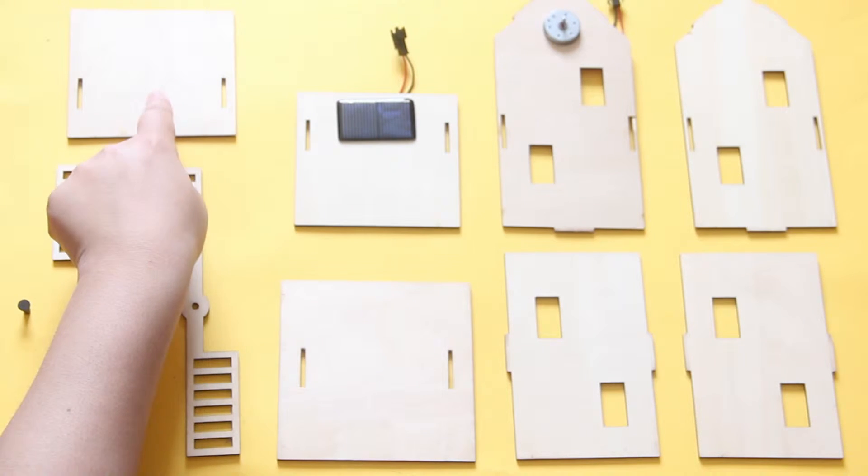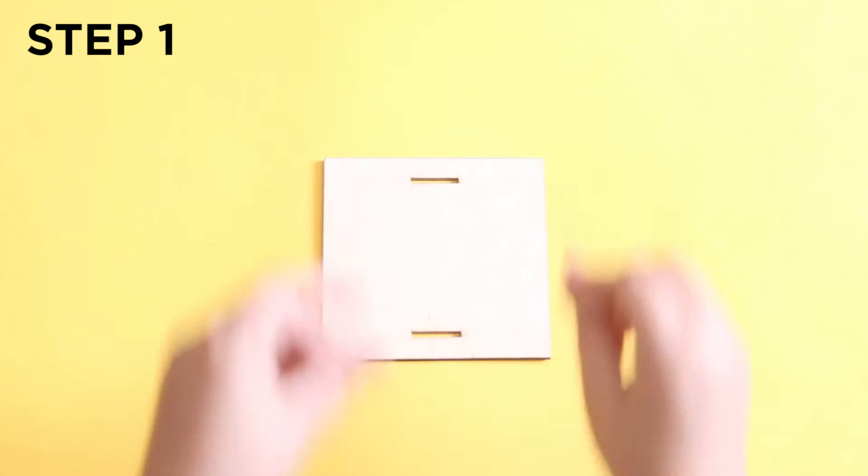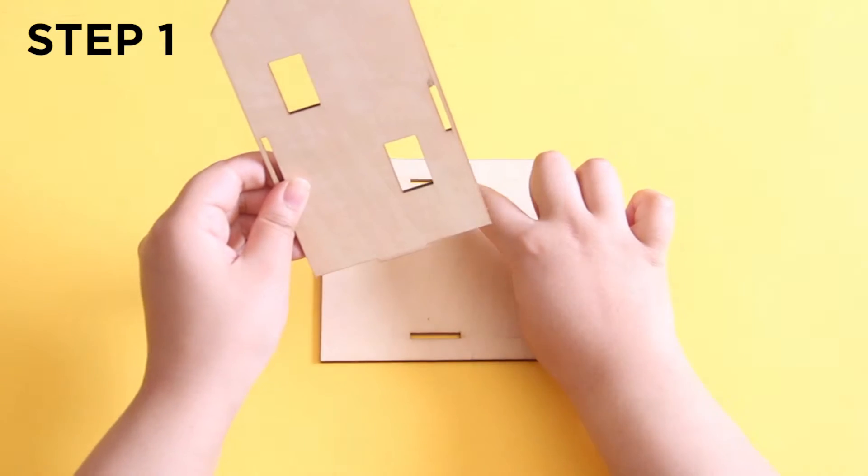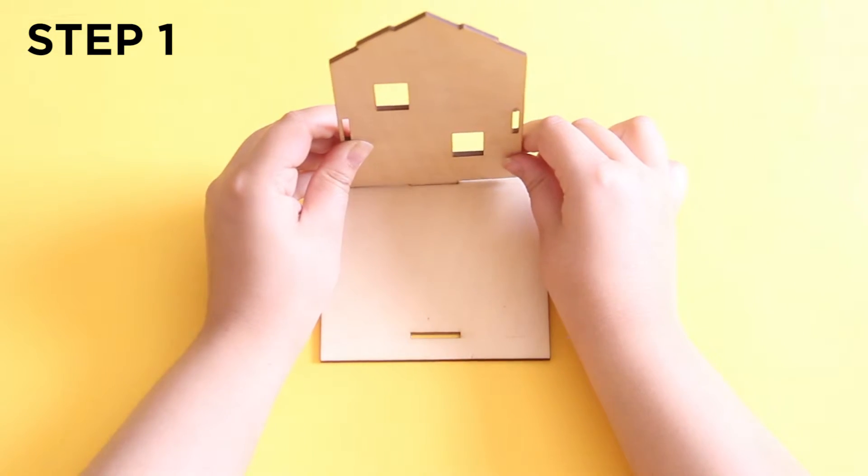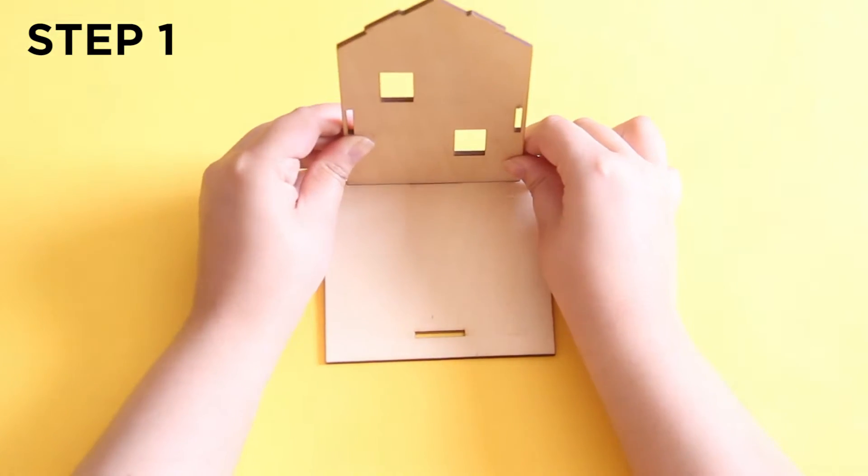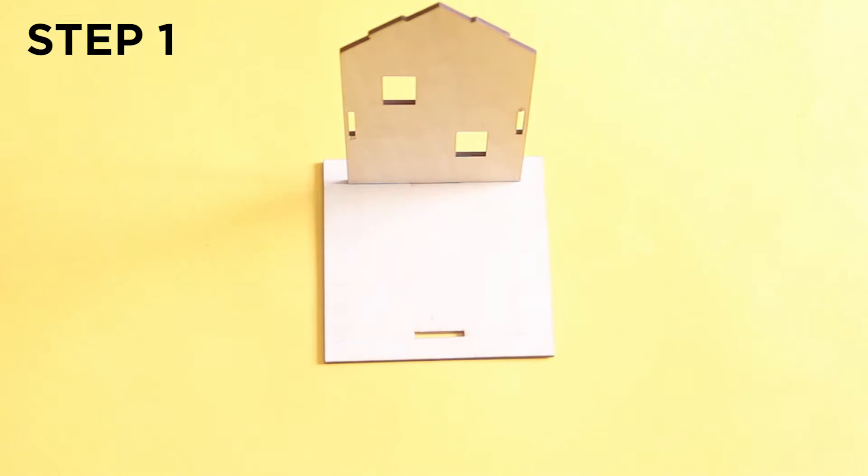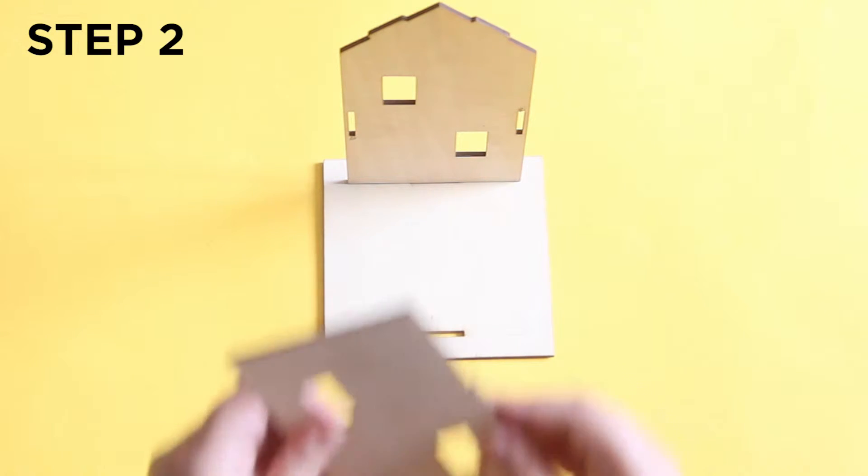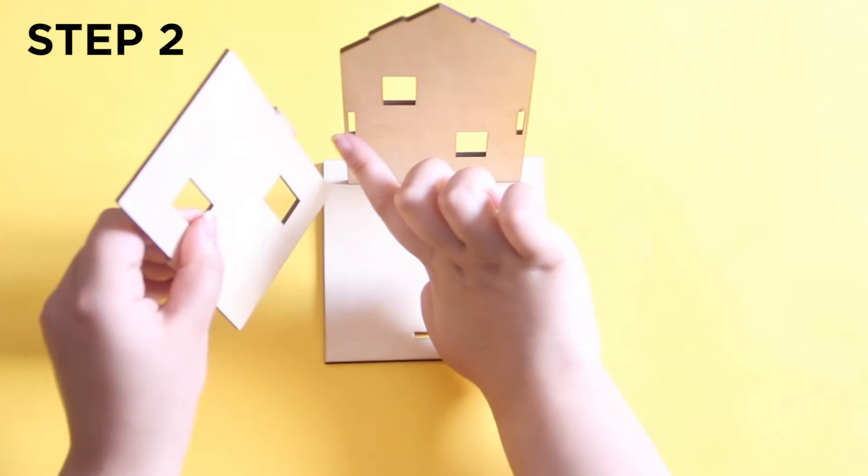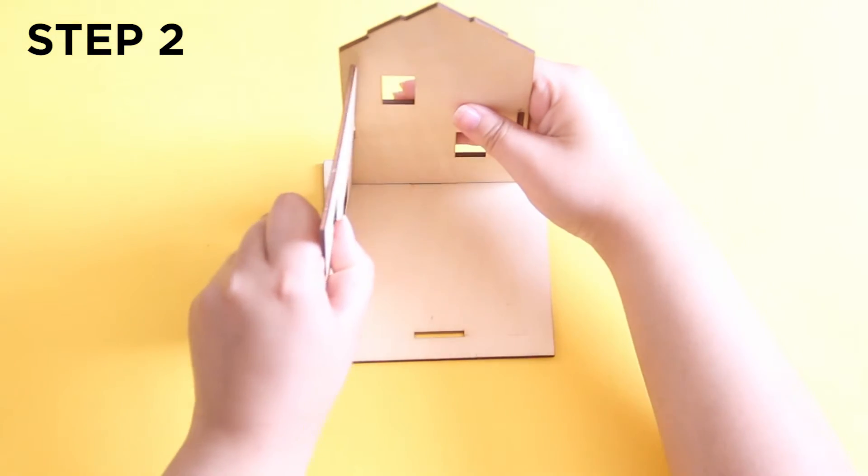For the first step, take your base and attach the back part into the slot. Next, you need to attach the side part into the back part slot. Then do the exact same thing with the other side part.